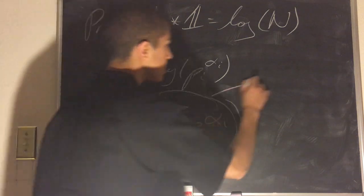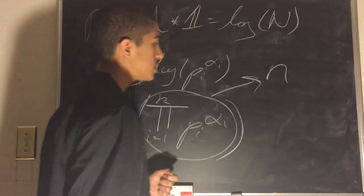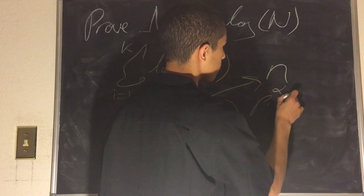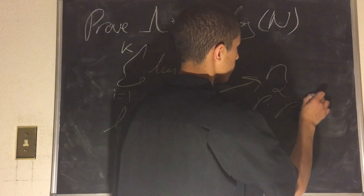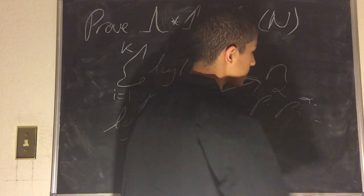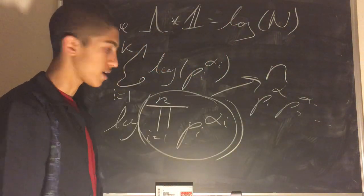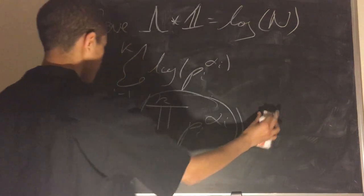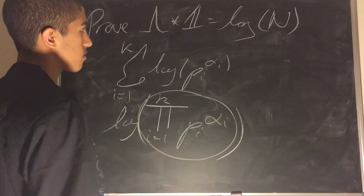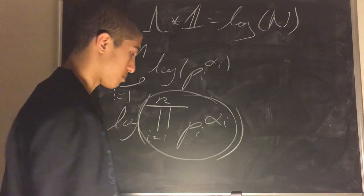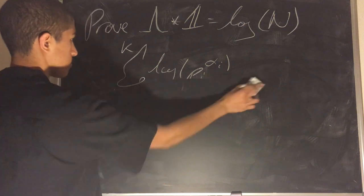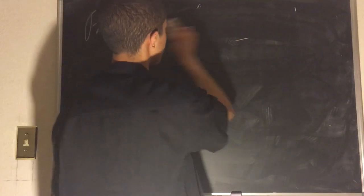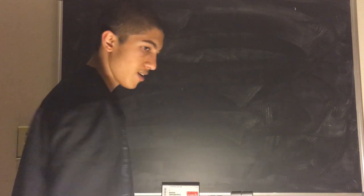And that product looks very, very familiar — that's because it is N. We defined N as P1^alpha_1 times P2^alpha_2 all the way to Pk^alpha_k, and that is exactly what this product is. So finally, we get this is equal to log N. And therefore, we have proved our example. So wonderful — this concludes our section on the Dirichlet convolutions. Thank you very much.